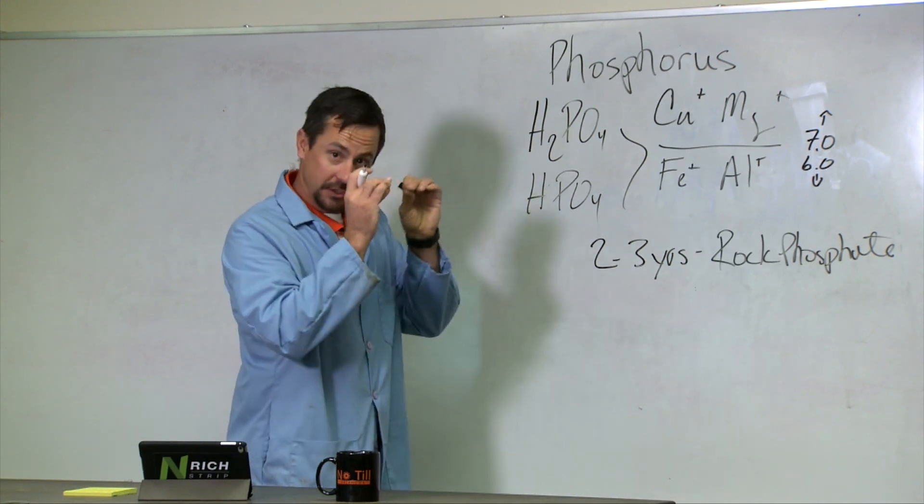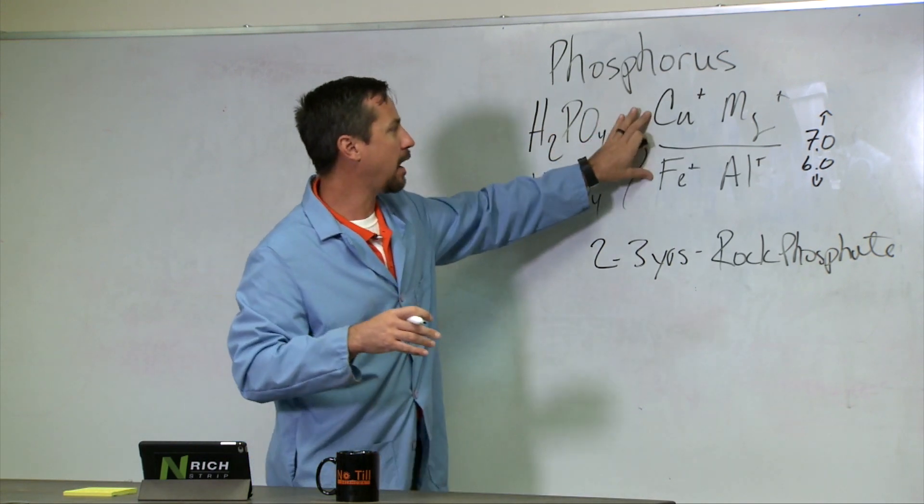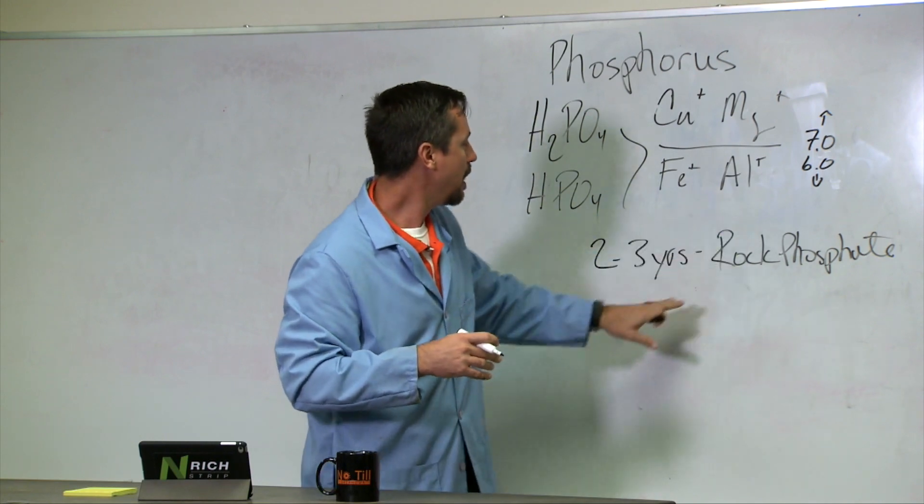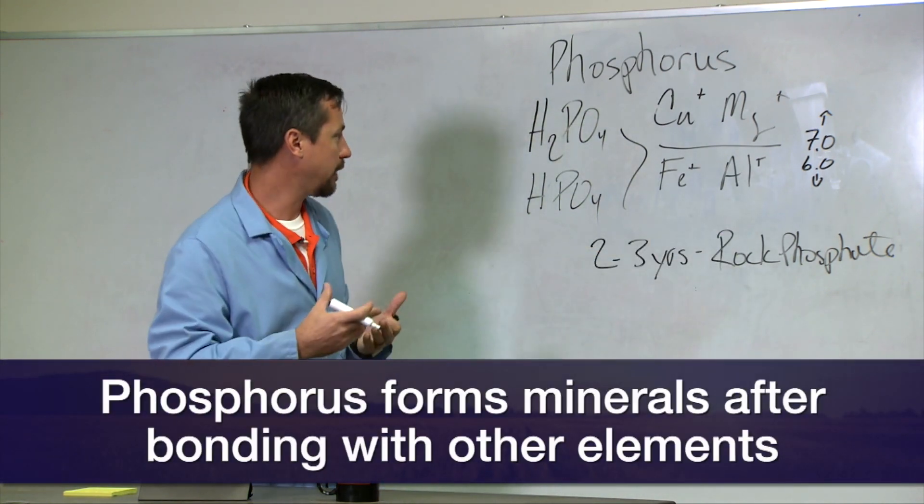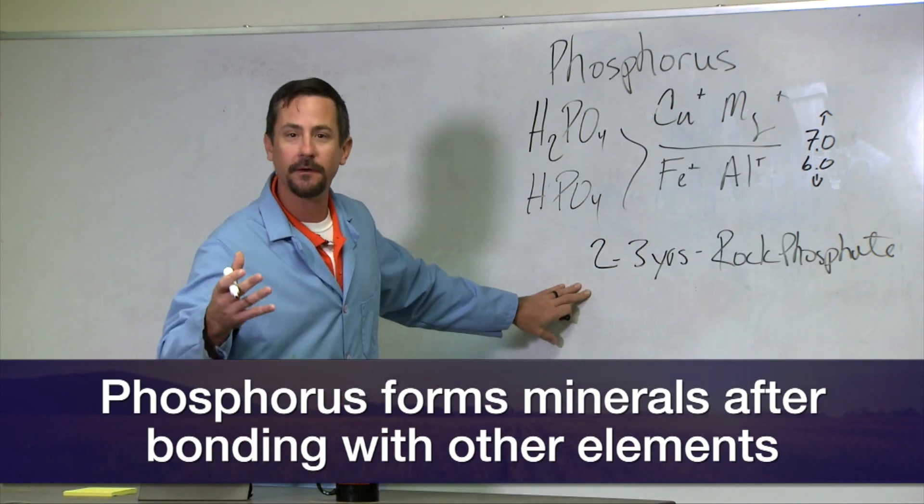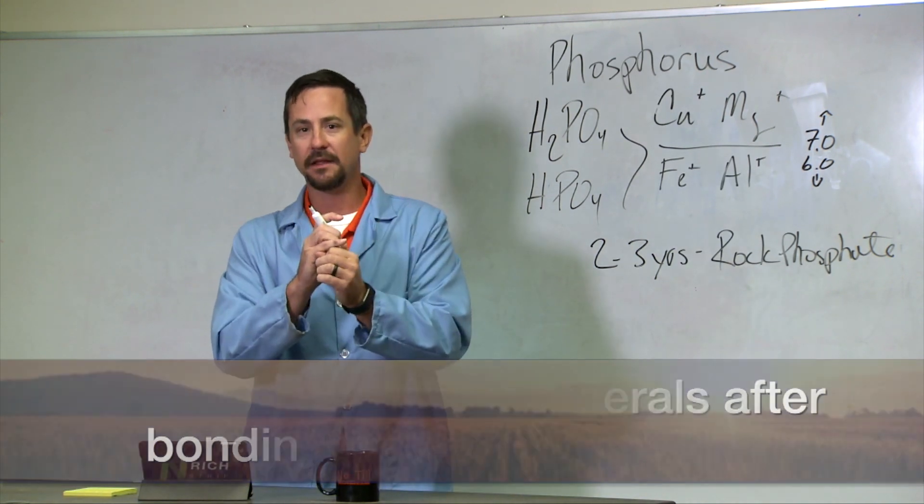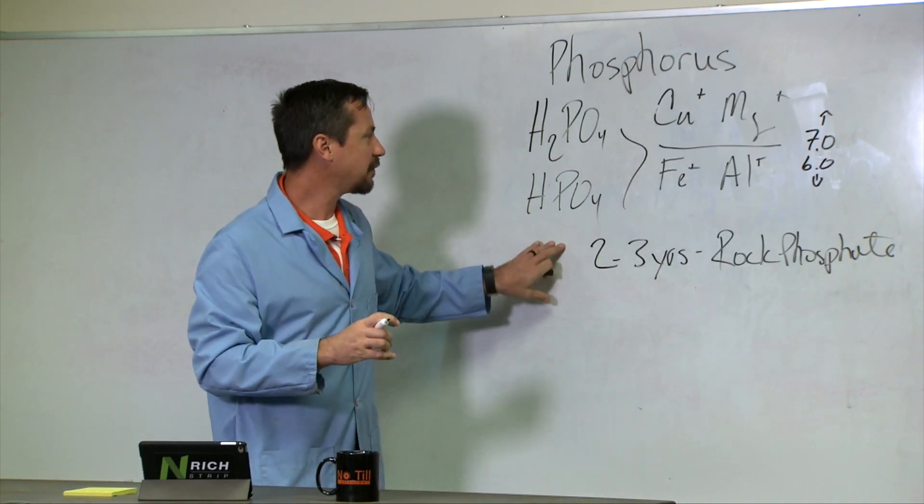It moves for just a little bit in that first drainage, and then it starts binding immediately with the calciums, irons, and aluminums, becoming minerals and no longer plant-available. That's why, when we look at phosphorus management, we like to band it—put it in the soil in concentrated bands to slow this process of binding with our cations.